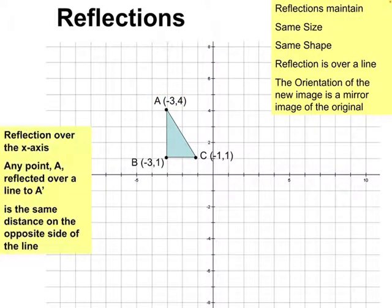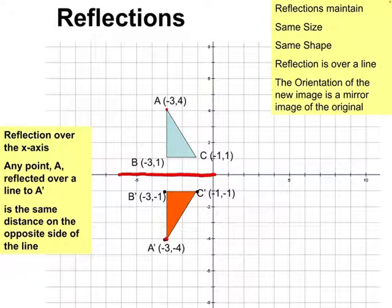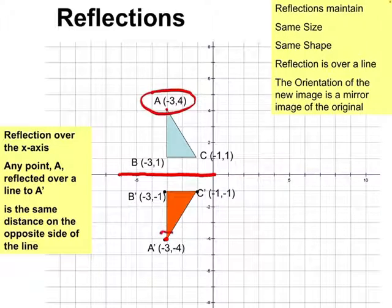Let's take a look at a reflection over the x-axis. The x-axis is now our mirror, and everything goes to the opposite side of it. Notice that point A, which was way up here — the farthest point from the x-axis — becomes A prime way down here, the farthest point from the x-axis on the other side. The reflection changes the orientation, but it's still the same size and same shape, just reflected over the x-axis. Look at point A at (−3, 4) and then look at A prime — something stayed the same, but something changed.